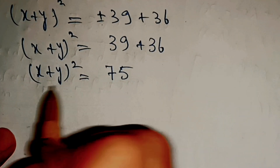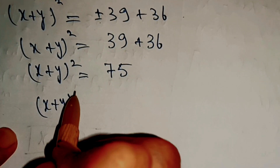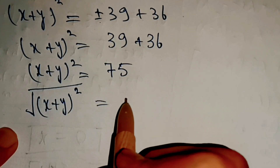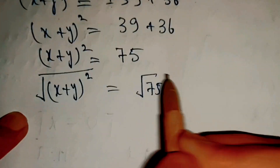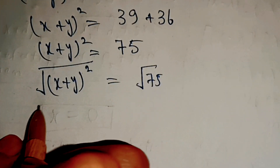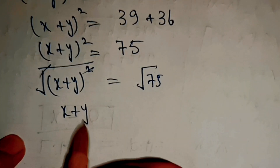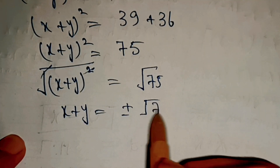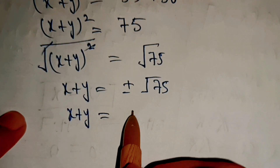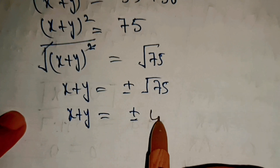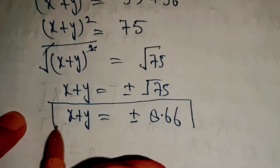Now we'll take the square root on both sides. The square and root cancel out, so x plus y equals plus or minus the square root of 75, which equals plus or minus 8.66. So this is the value of x plus y.